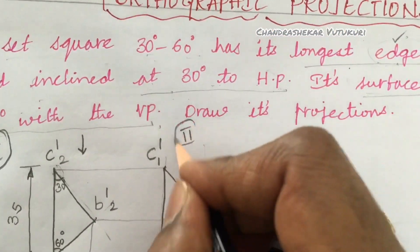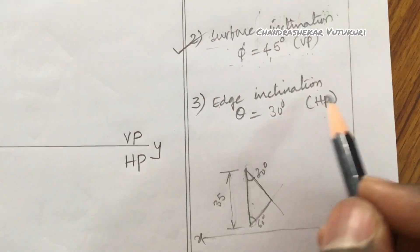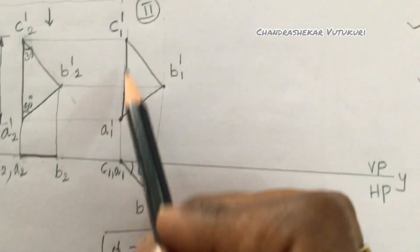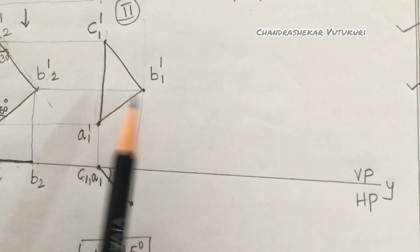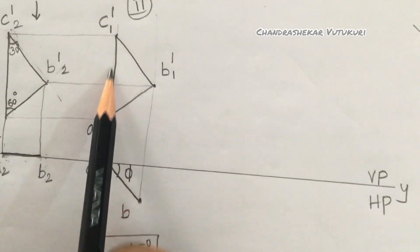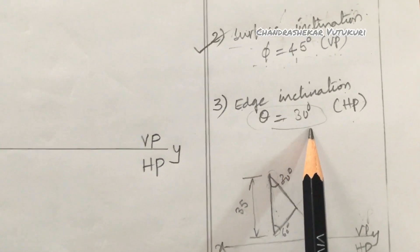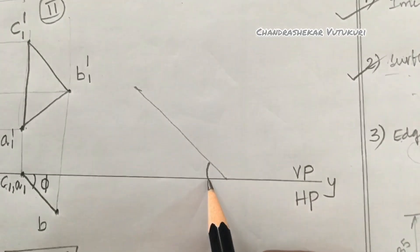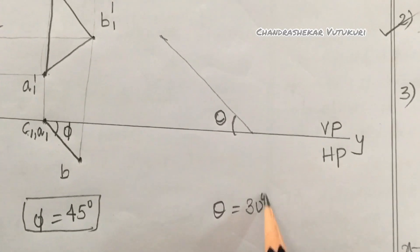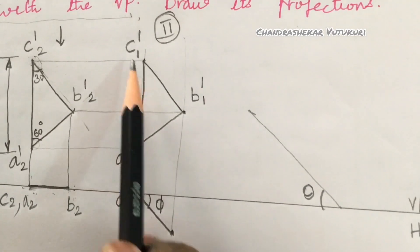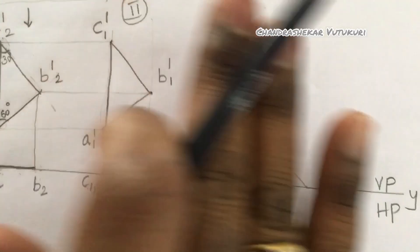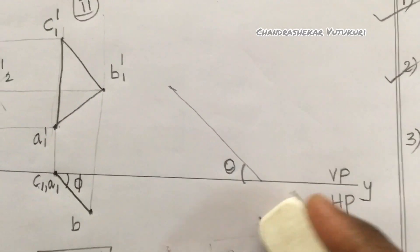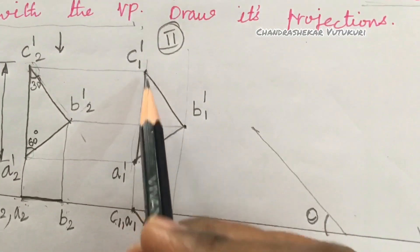Now for step 3, edge inclination: the longest edge of 35 mm is in the VP and inclined at 30 degrees to HP. This is theta = 30 degrees. Draw a line making an angle of 30 degrees to HP. We concentrate on the second step and plot the third step from it. The second step result needs to be converted to step 3.